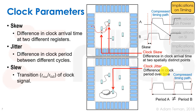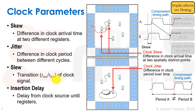Slew (or transition time) is the rise or fall time of the clock signal. Insertion delay is the actual propagation time from the clock source to the registers. We often refer to the insertion delay of the whole clock network as the average insertion delay to all clock points.